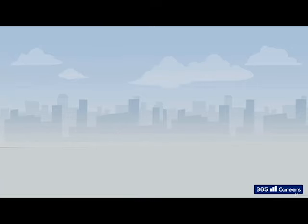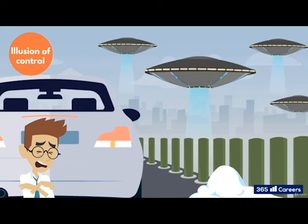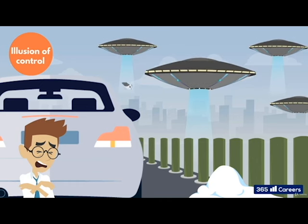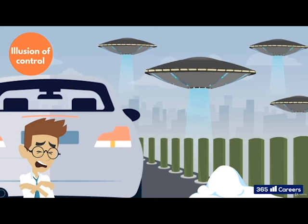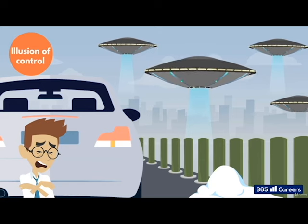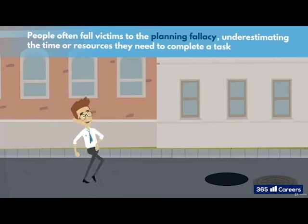Another factor impacting our ability to plan well is the illusion of control. This is just what it sounds like. In the broadest of terms, people often overestimate their ability to control events, focusing on the things they can control rather than the things they can't. Think of gambling behavior, for example. When people participate in dice games, they tend to throw the dice harder for high numbers and softer for low, as if that's going to make any difference. So what this journey into human cognition teaches us is this: People are generally bad at planning. And they often fall victims to the planning fallacy, underestimating the time or resources they need to complete a task.